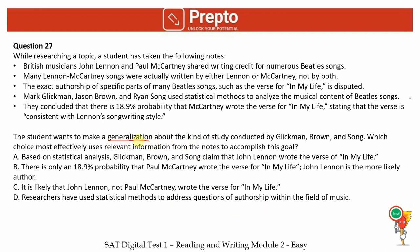The first thing, as usual, is to read the question. The student wants to make a generalization about the kind of study conducted by researchers A, B, and C. Which choice uses information from the notes to accomplish that goal?